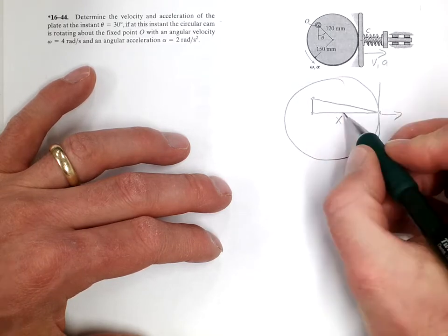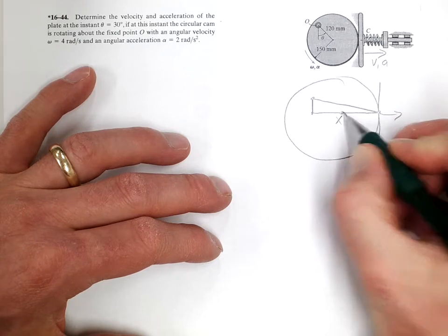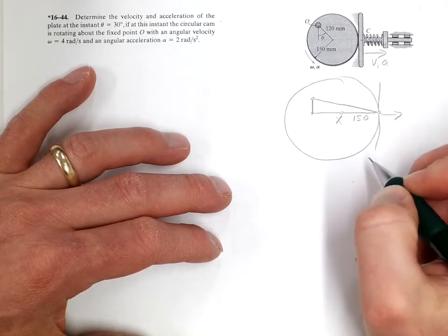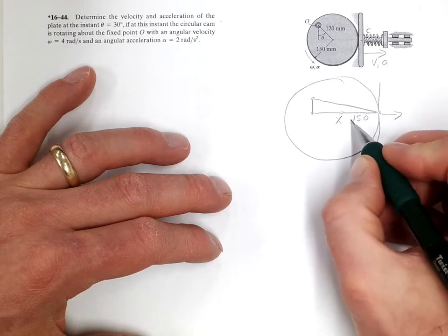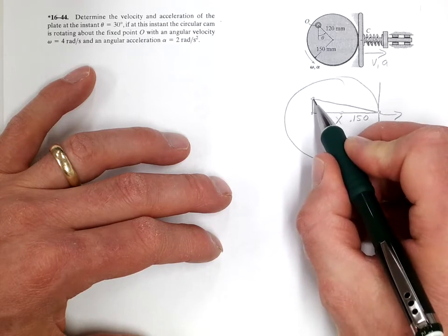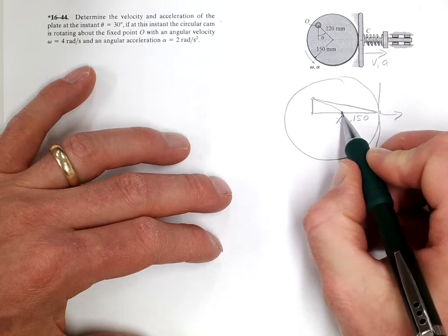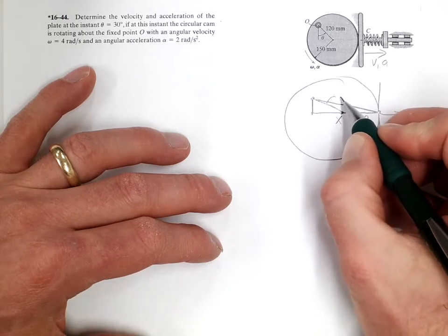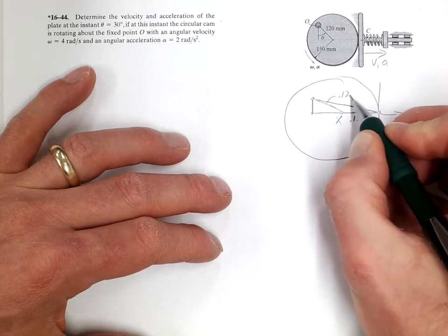Now the center of the circle will be right there. So this distance is 150 millimeters or 0.15 meters. And this distance here is 120 or 0.12 meters.